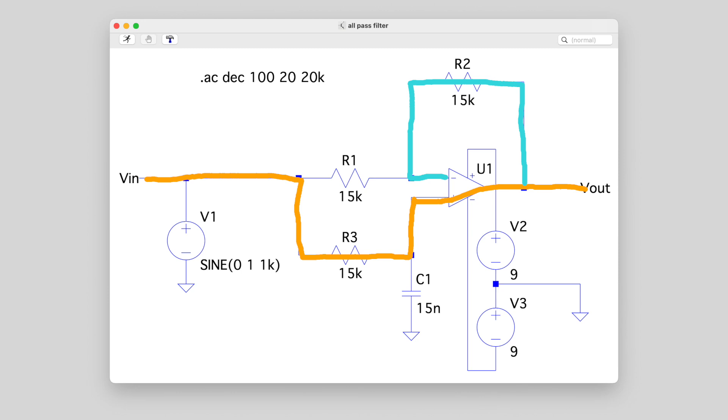And all the while we're hearing all of the frequencies at unity gain, and around the cutoff frequency we're getting more or less of one or the other, and so that's how the phase rotation is happening and the phase shift is happening.